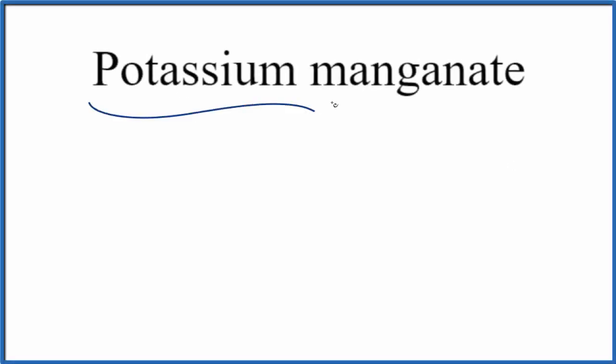To write the formula for potassium manganate, the first thing we're going to do is write the element symbol for potassium, and that's just K.